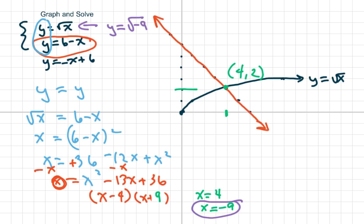y equals square root of negative 9. Yes, that is 3i, but we only want real solutions. So there's no real solutions with x equals negative 9, so we discard that.